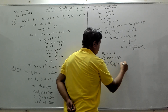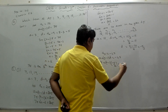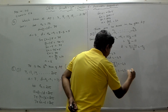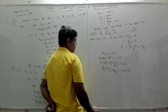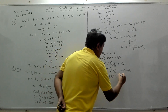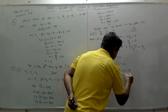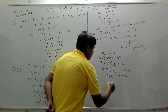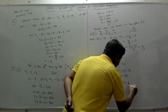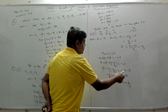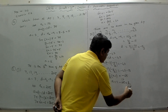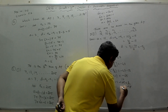Moving 18 to the other side: (n−1) × (−5/2) = −47 − 18 = −65. So n − 1 = −65 × (2/−5) = 65 × 2/5 = 26. Therefore n = 26 + 1 = 27.